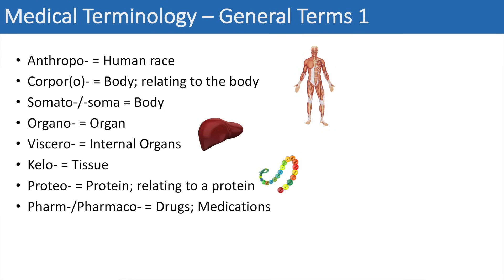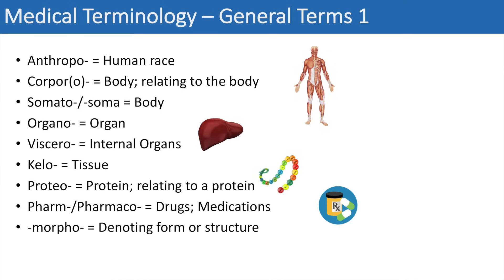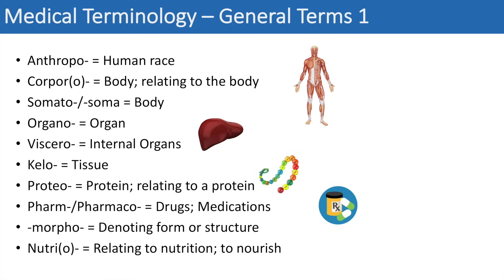The next prefix is pharmaco, which means drugs or medications — you can think of pharmacy, pharmacist, or pharmacology, all relating to drugs and medications. The next medical term is morpho, which means denoting form or structure, so you can think of morphology. The next prefix is nutri or nutrio, which means relating to nutrition or to nourish — you can think of a nutritionist.